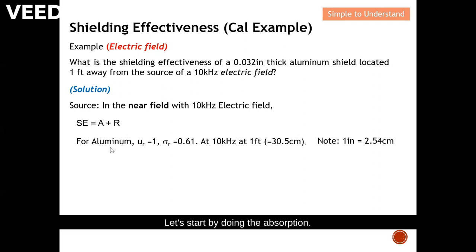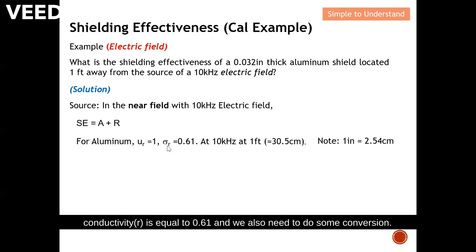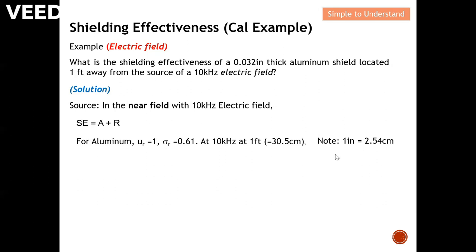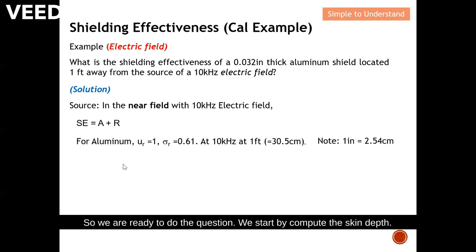Let's start by computing the absorption. For aluminium, mu_r is equal to 1 and conductivity_r is equal to 0.61. We also need some unit conversions: one foot is about 30.5 centimeters, and one inch is about 2.54 centimeters. Now we are ready to compute the skin depth using the standard formula.